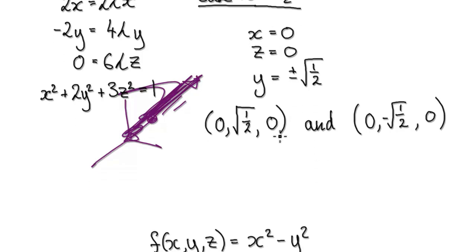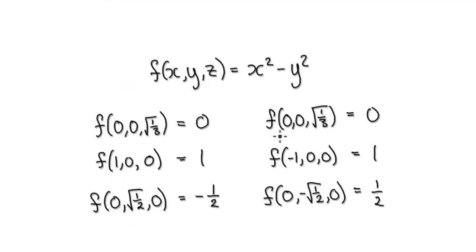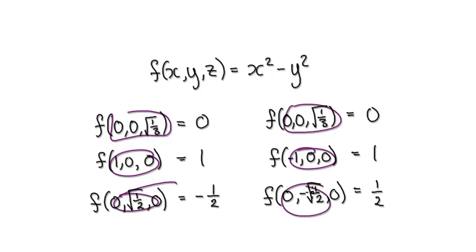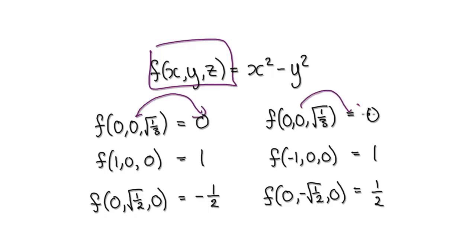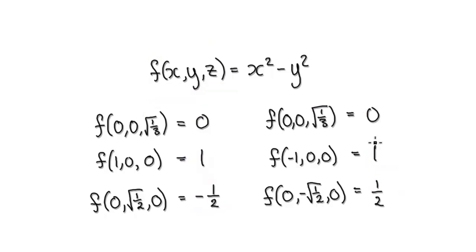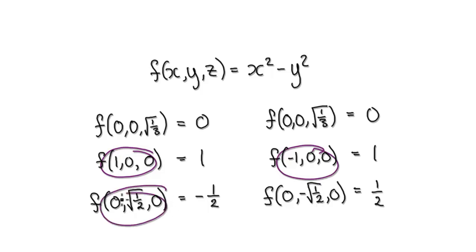So we've found six critical points in total. Now let's see what happens when we put each into the function. The first two points give a value of zero. The next two give a value of one. The last two give values of −½ and +½. So the highest values are one, and the lowest value is negative one half.